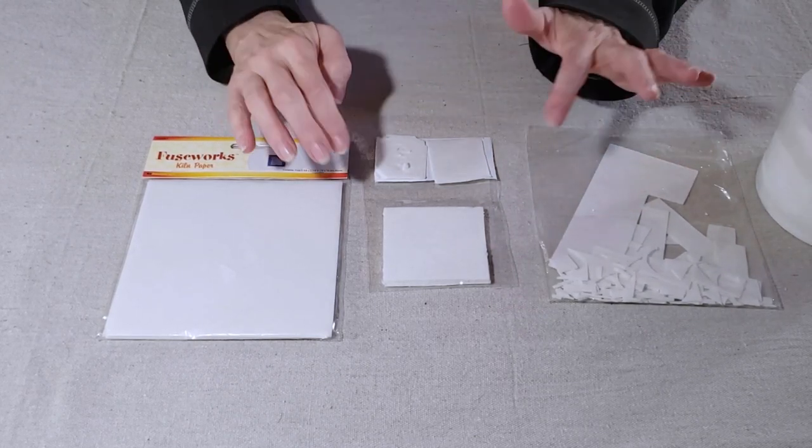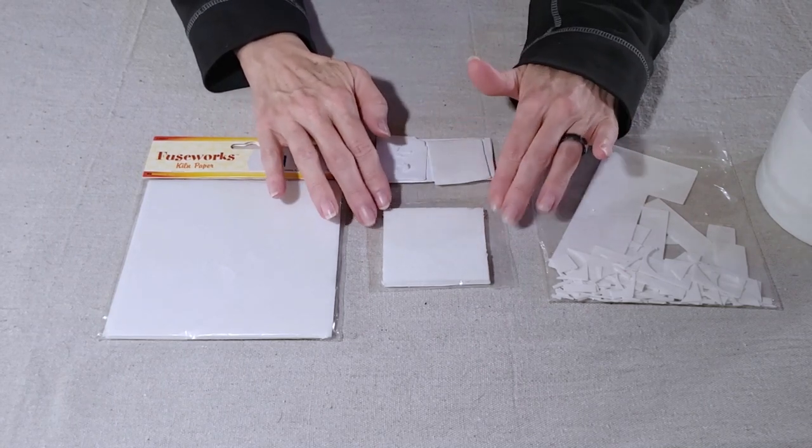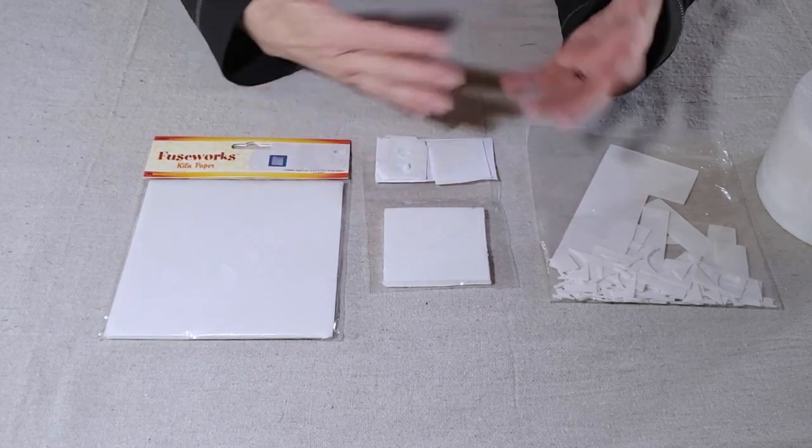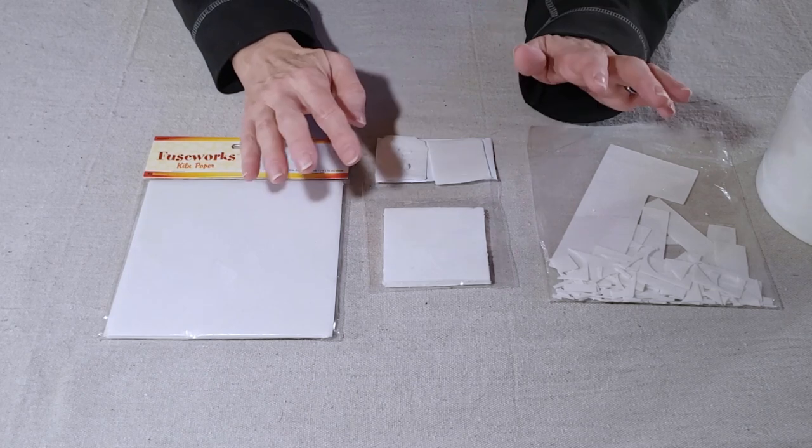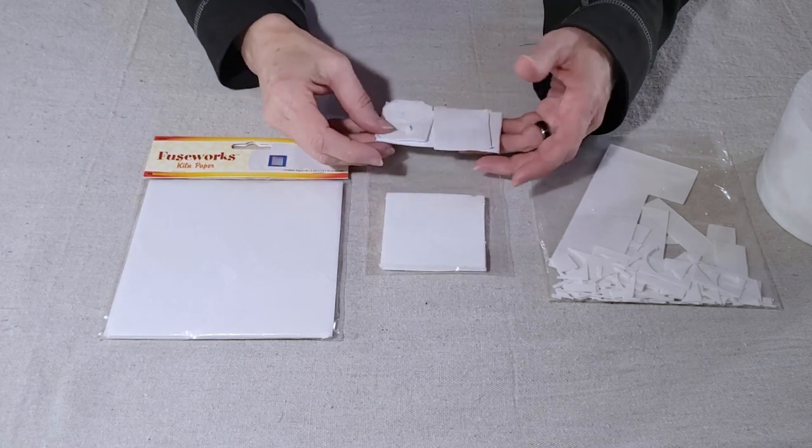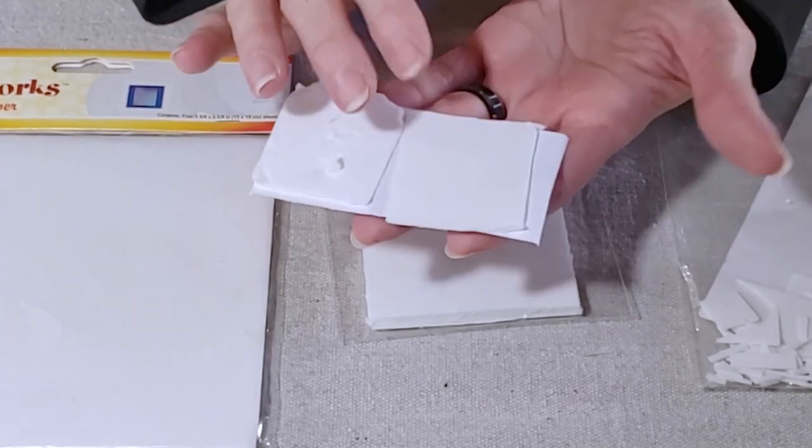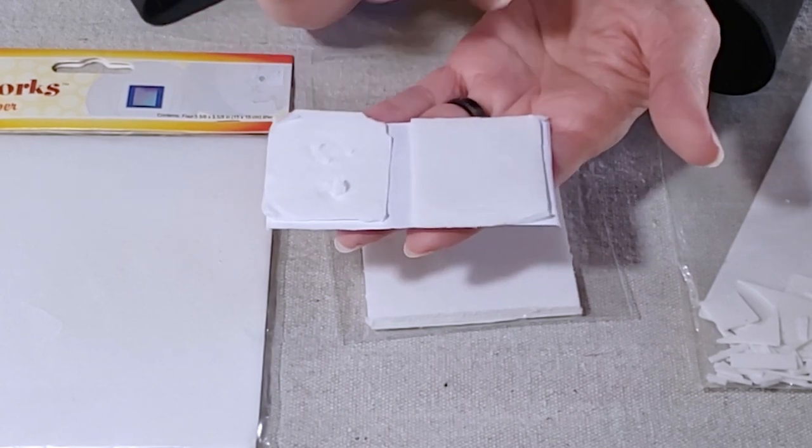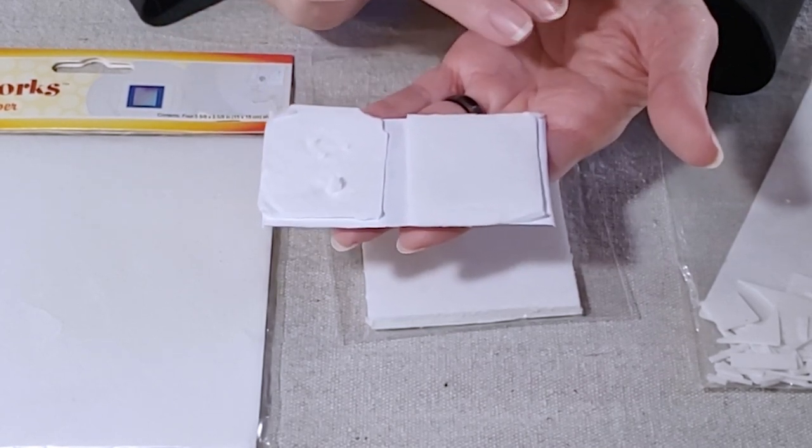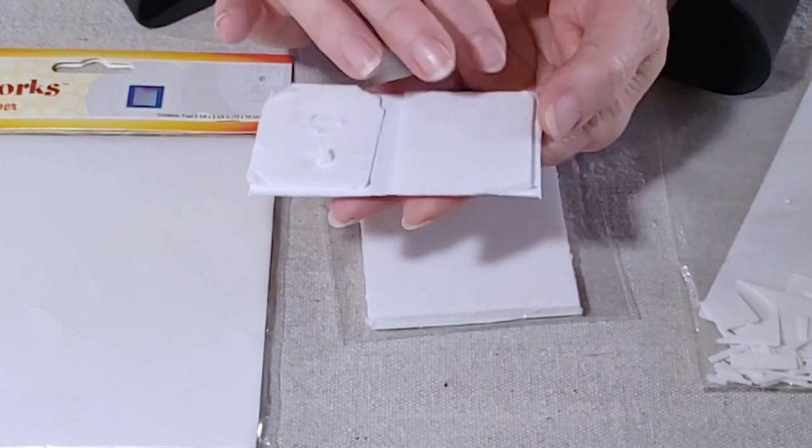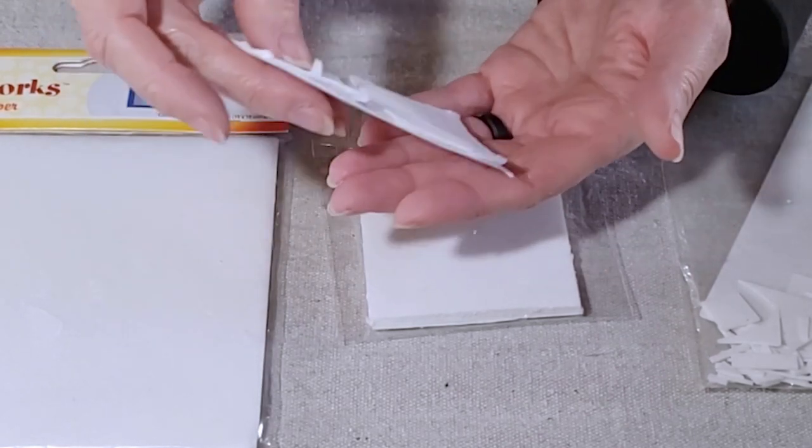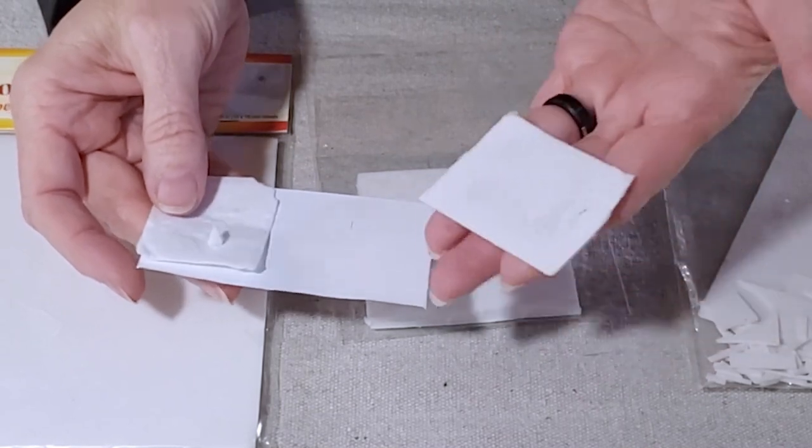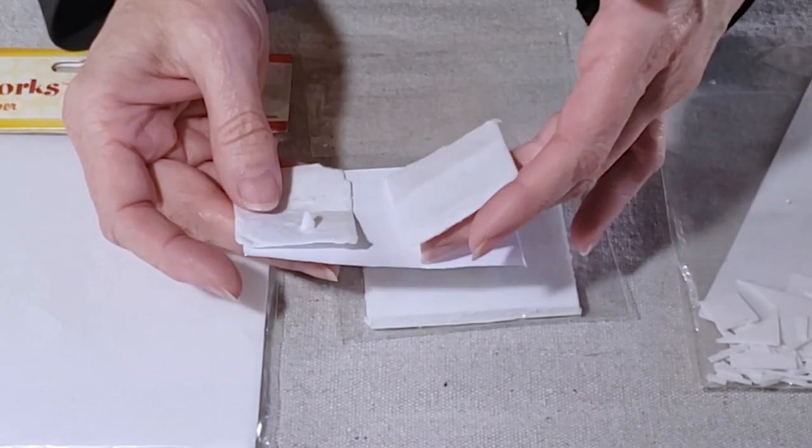The last tip is that generally speaking the kiln paper is single use, meaning you fuse, take the glass off, and throw the fusing paper away. However it is possible to reuse the kiln paper at least two times. Often I do that when I'm adjusting pieces. If I haven't disturbed the kiln paper too much I will reuse it. Sometimes I actually can take it out of the kiln and still reuse it.